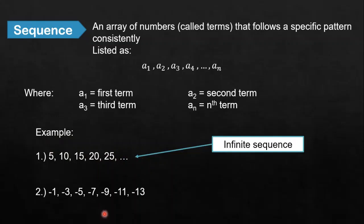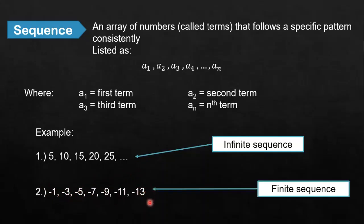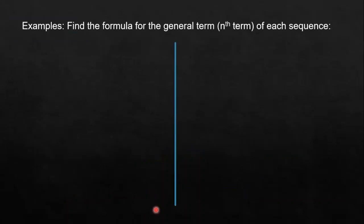But if the sequence is bounded — in other words, there is a last term — like what we see in example 2: -1, -3, -5, -7, -9, -11, -13, and then that's the end. This is called a finite sequence. What we do with these sequences is find the nth term formula, also called the general formula.